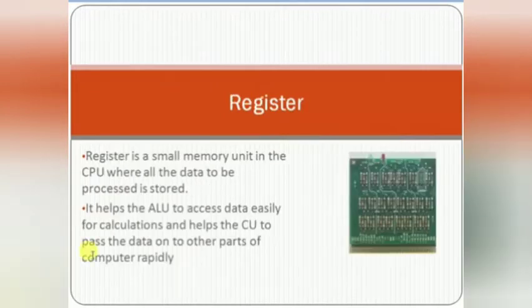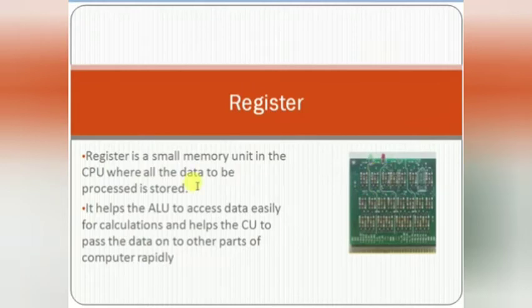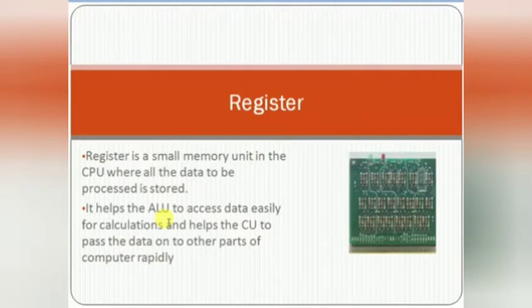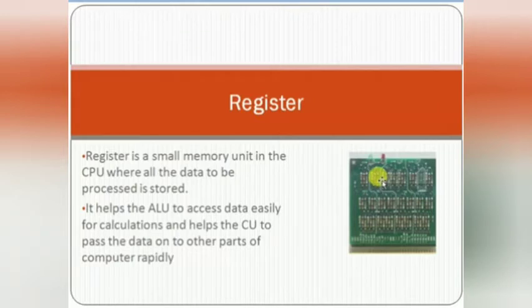The last section of the CPU is the Register. A register is a small unit of memory inside the CPU where all the data to be processed is stored. It helps the ALU to access data easily for calculations, and helps the Control Unit to pass data to other parts of the computer rapidly.